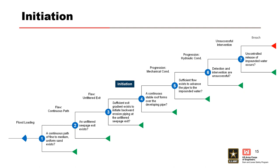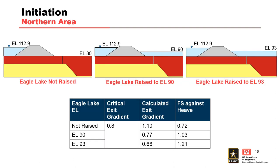First, we'll evaluate how the emergency efforts affected the likelihood of initiation of backward erosion piping. Prior to the flood event, the Vicksburg District performed an under-seepage analysis to determine the expected factor of safety against heave based on the forecasted flood elevation and different land-side water elevations. In the northern area, these calculations were evaluated to determine whether the risk due to backward erosion piping could be sufficiently reduced without additional flood-fighting measures. The factor of safety against heave with Eagle Lake at its normal water level was 0.72, with a calculated gradient of 1.1, well above the critical gradient of 0.8.